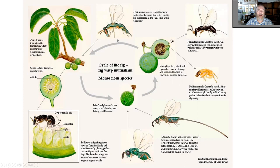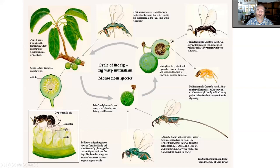The whole relationship is also hijacked by other herbivores called galling non-pollinating fig wasps, which are taxonomically from a different group. They oviposit through the wall of the fig, not entering inside. Their larvae are also herbivores feeding on ovules. There are also parasitoids that oviposit through the fig wall into the larvae of either pollinating or galling wasps. So there is a little food web inside the fig.